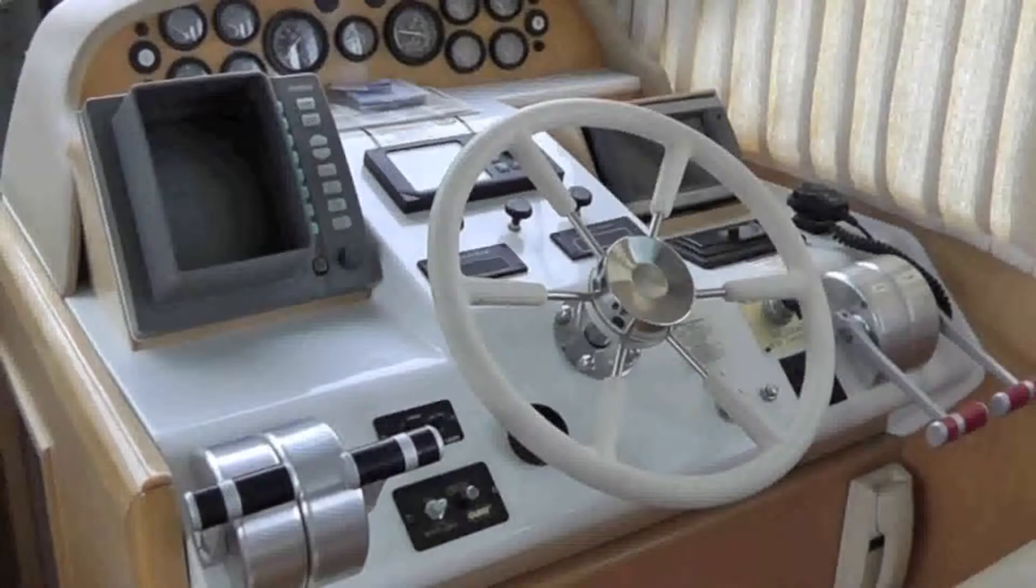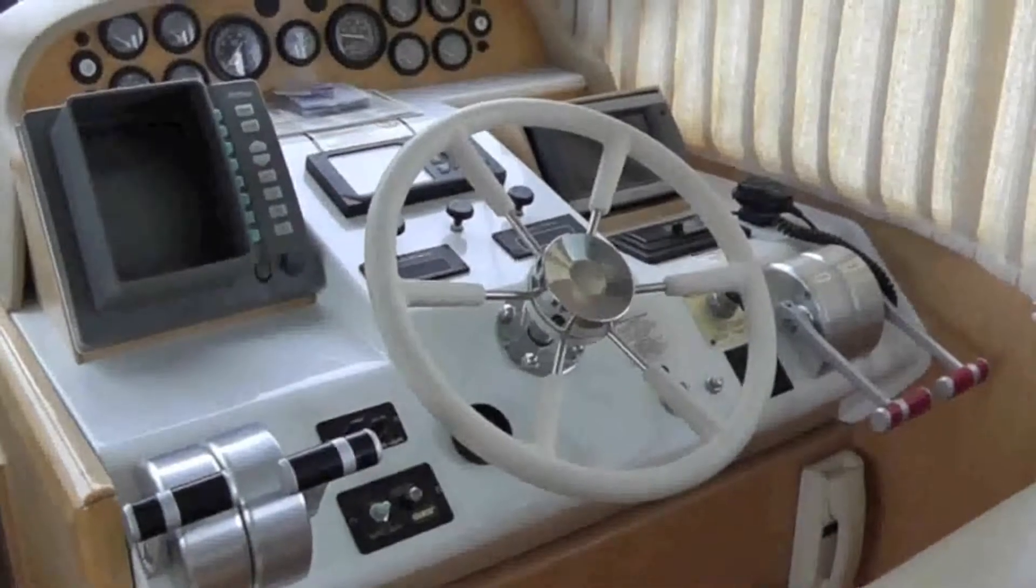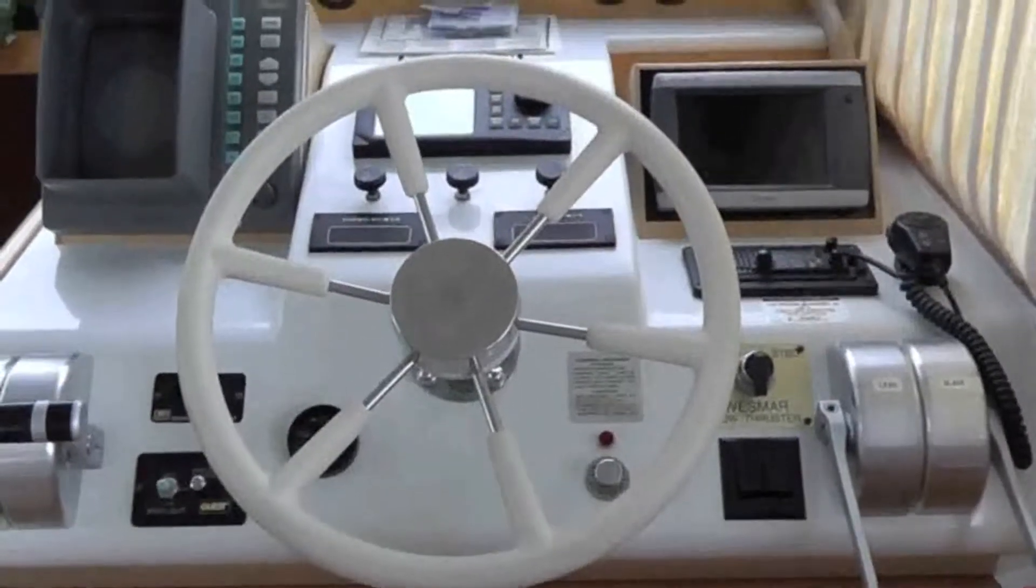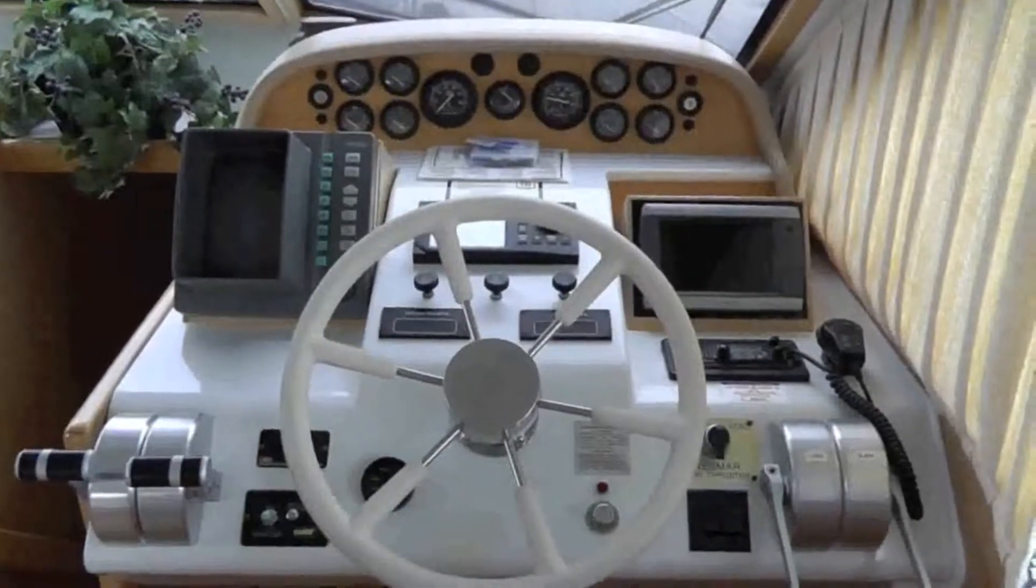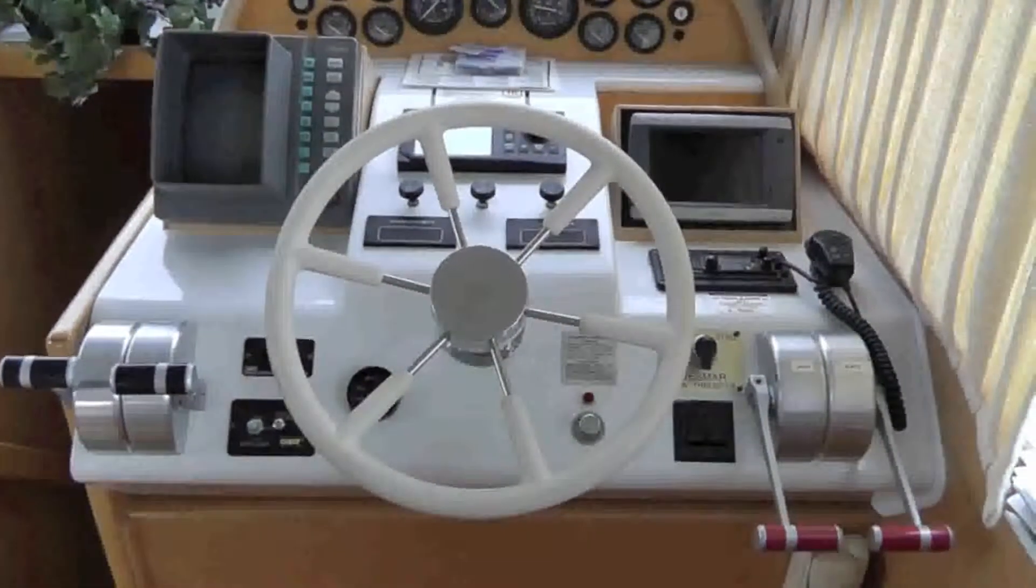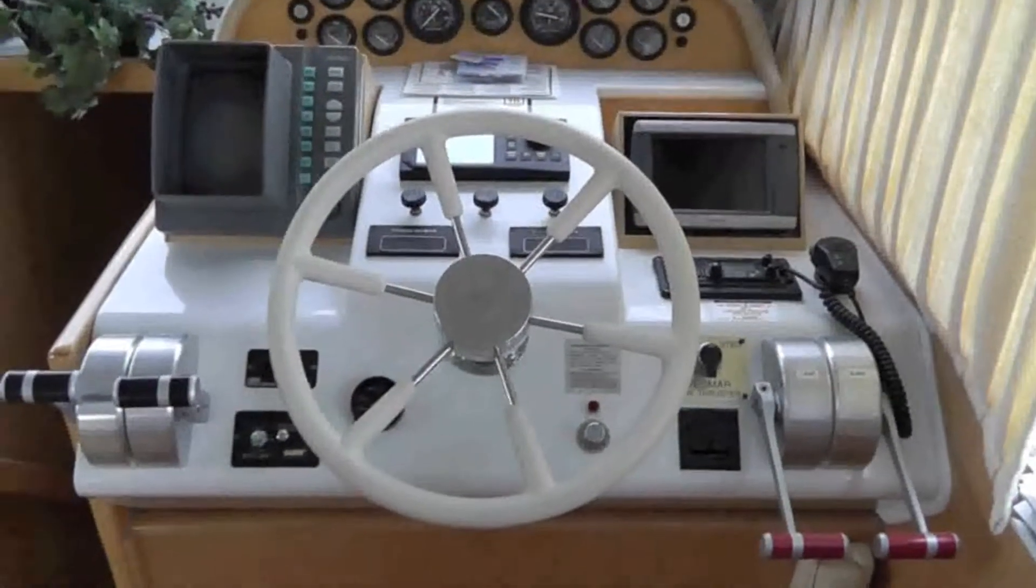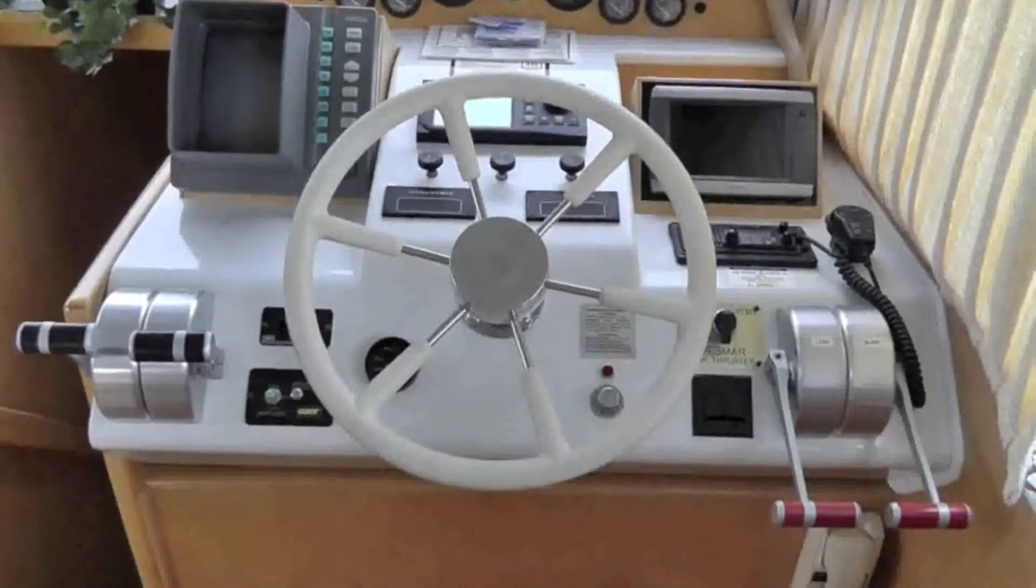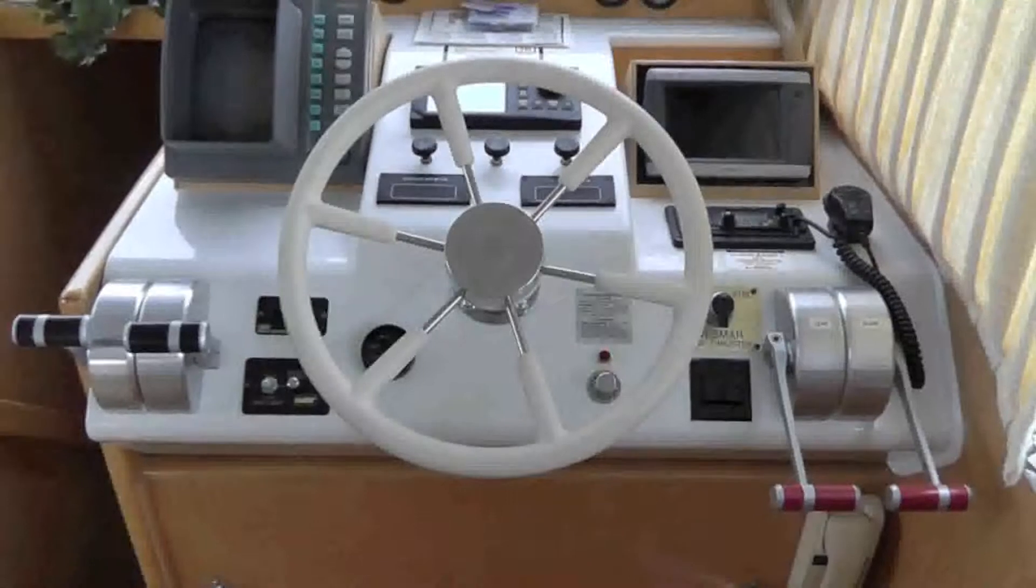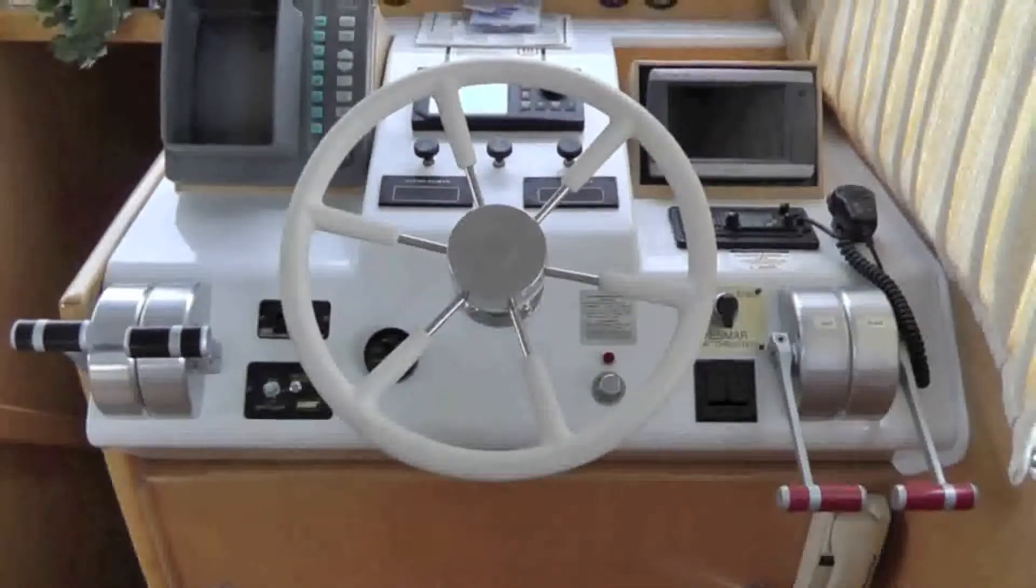Here we are at the lower helm station of the late 90s vintage Navigator. As you can see, we have a Hynautic shifter and throttle system with your standard old-school electronics and Glendanning engine synchronizer. The system runs a hydraulic glycol type fluid from this station all the way down to the engine room to a servo where the flow of fluid is actually turned into a rotary movement of a swing arm that will push and pull a cable to control the throttle and the transmissions in and out of gear.